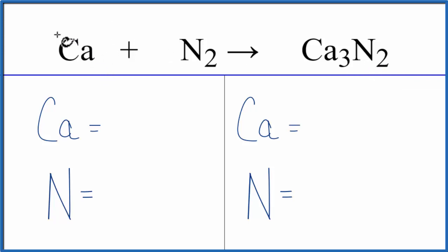So for calcium, we have one of those, nitrogen, two atoms. On the product side of the equation, we have three calciums and two nitrogen atoms.